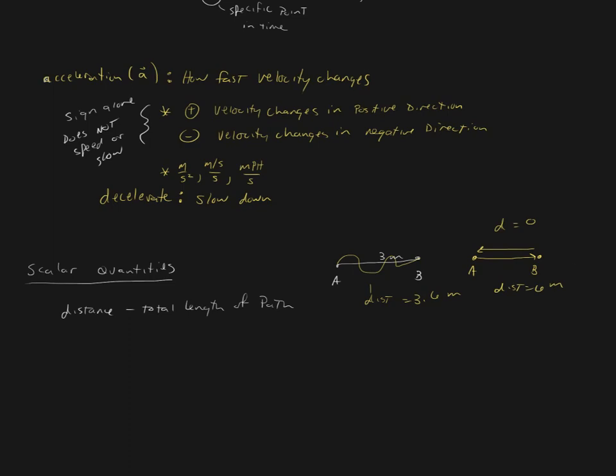The other term that we see that's a scalar quantity is speed. Speed is not going to be given any special letter, just like distance was not given a special letter. We don't want to use D for distance because D has already been used for displacement. Speed, we don't want to use the letter S because, believe it or not, S is also a variable which can be used to represent displacement.